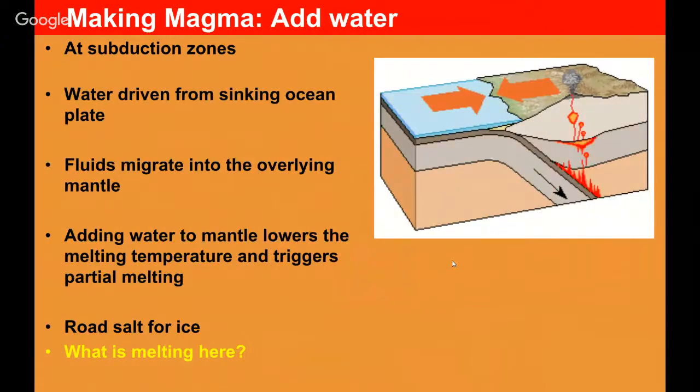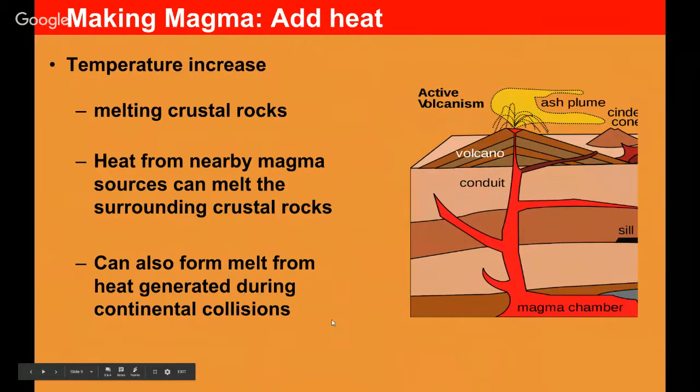Then we have the scenario where we're adding water. Like I said, that subducting plate is bringing some of that ocean water with it, and as that water is driven off, it's generating new magma. These ocean waters migrating up into that wedge of mantle in that subducting zone allow for new magma to be created. I mentioned the analogy of road salt for ice.